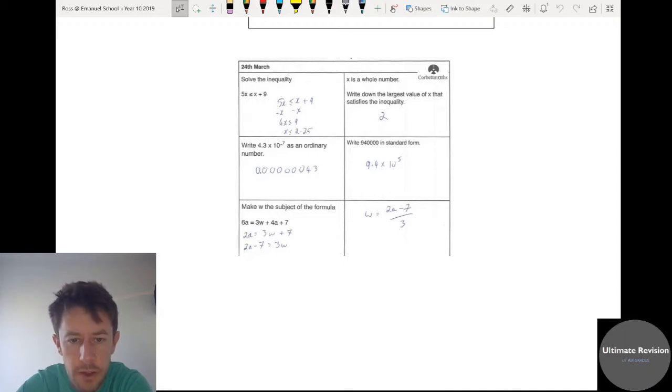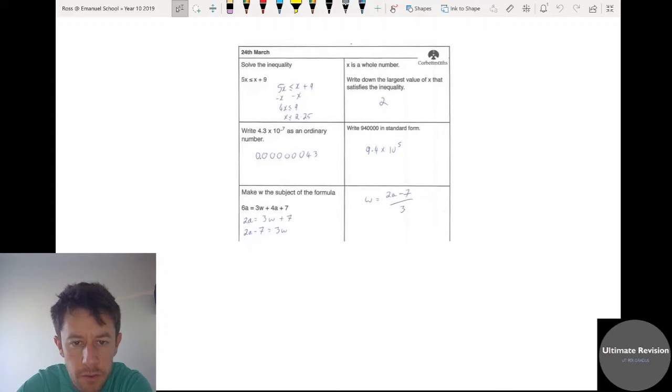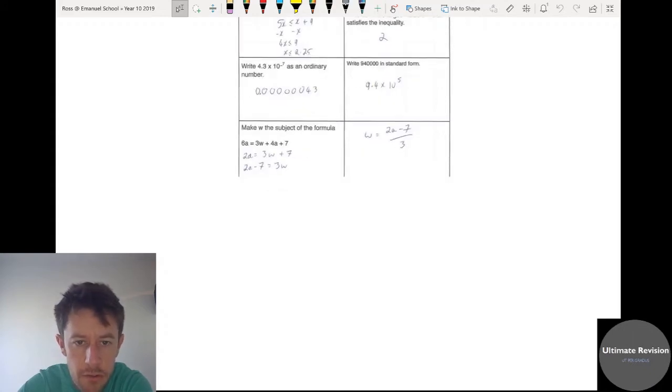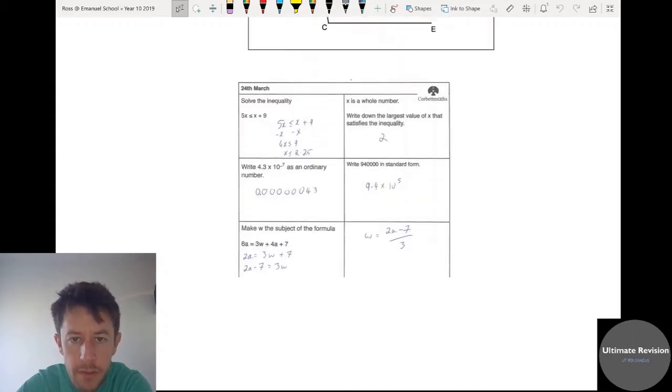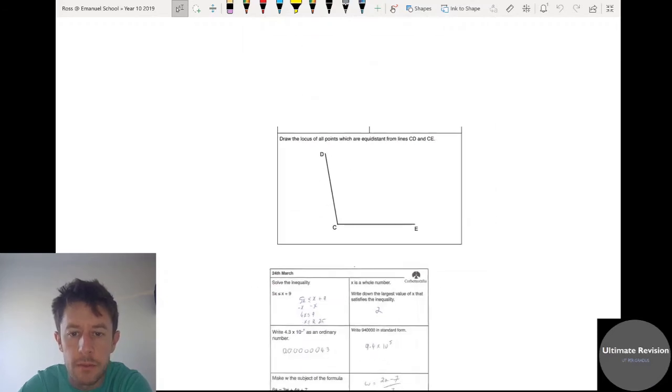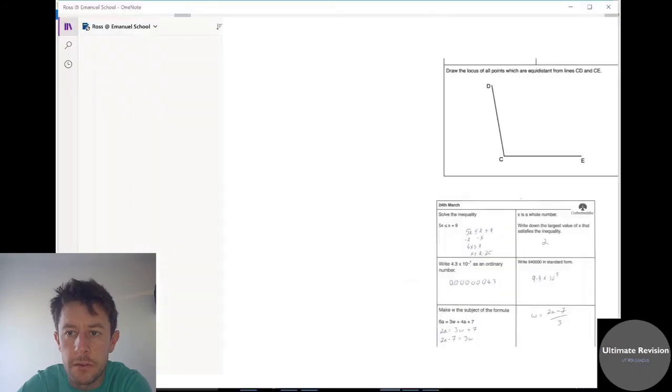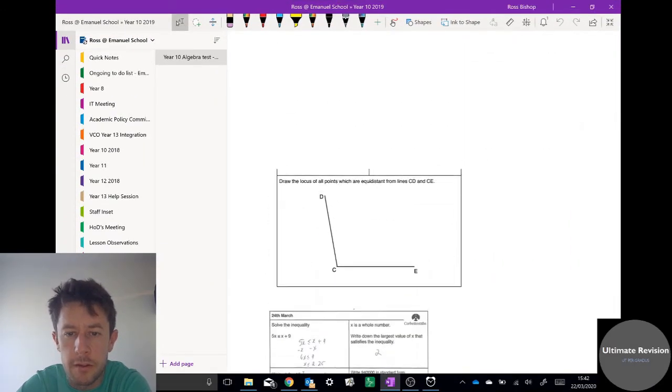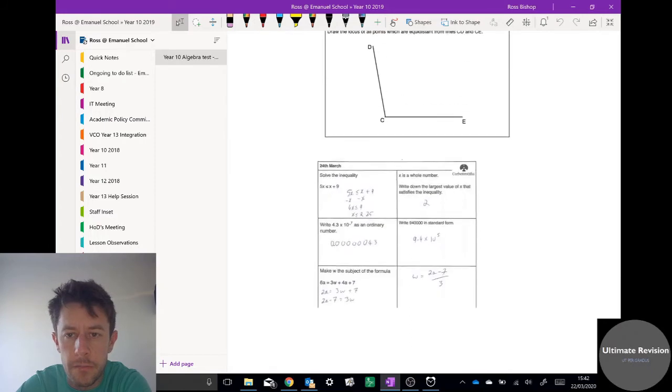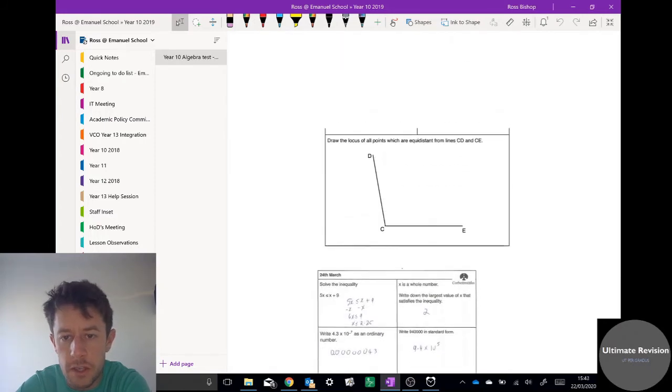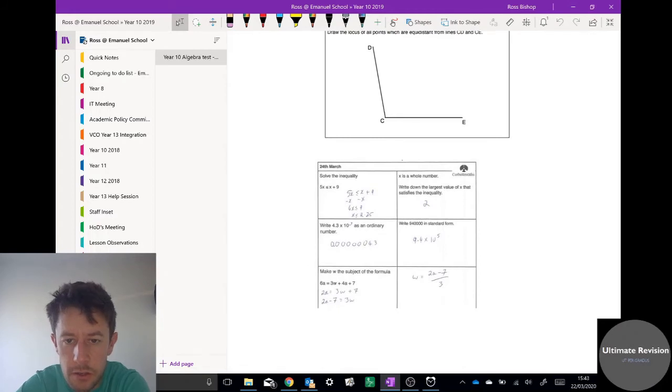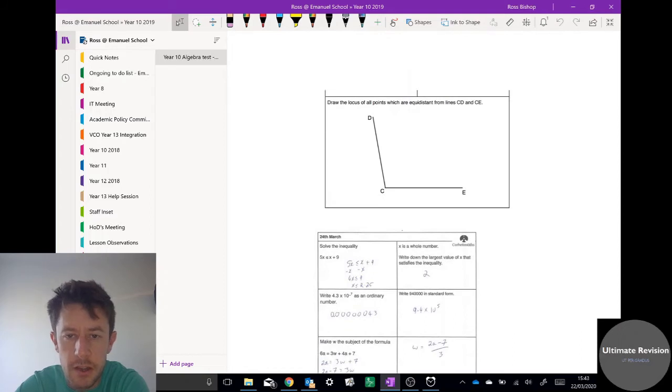This one here, make w the subject. This sort of cut off a little bit at the bottom, but it should be 2a minus 7 over 3. There you go. And the last question, again we've lost a little bit. Let's just come out of here and then back in. Hopefully that's... the last question there was, it should have been a line passing through that point there. Okay, so give yourself a score. I think that's out of 1, 2, 3, 4, 5, 6. Give yourself a score out of 6 and then go back to the front of your books and we'll start the lesson.